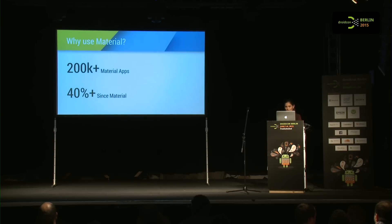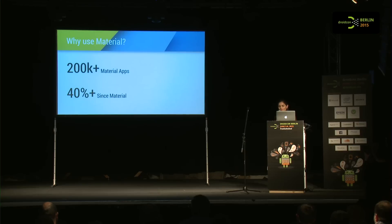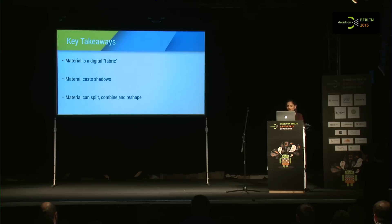At Google I/O this year, Google announced that around 200k-plus apps are material apps in the Play Store today. Since they announced material design last year, 40-plus percent of apps released in the Play Store use material design. If you don't count games, more than one out of every three apps is a material design app — a really huge number considering it hasn't even been a year since material design has been out. To recap: material is a digital fabric made with pixels, it has shadows and elevation, it is depicted in a 3D model with X, Y, and Z index where Z depicts elevation, and material can split, combine, and reshape.